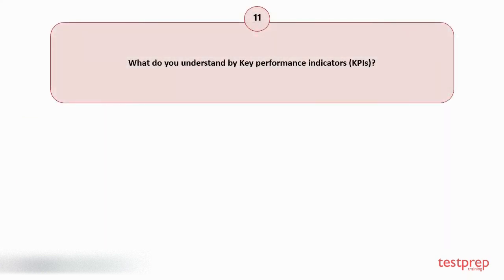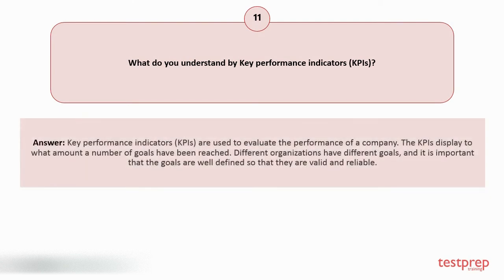Question number 11: What do you understand by key performance indicators? Key performance indicators are used to evaluate the performance of a company. The KPIs display to what amount a number of goals have been reached. Different organizations have different goals, and it is important that the goals are well defined so that they are valid and reliable.